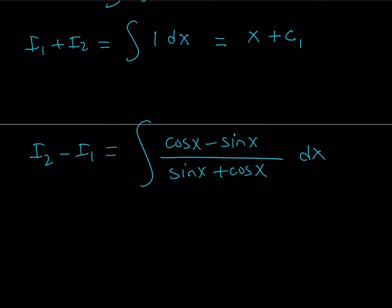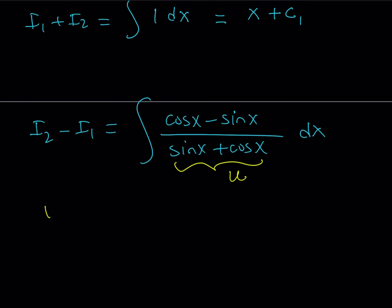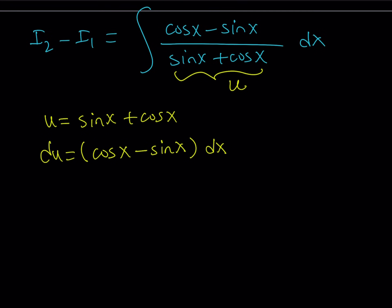But how do you evaluate i2 minus i1? Here's the thing. Remember, we talked about the derivative of the denominator. There was a reason for that because we're going to use u substitution. And you know that I love u substitution. So this is going to be called u. u equals sine x plus cosine x. And this implies du equals cosine x minus sine x multiply by dx.